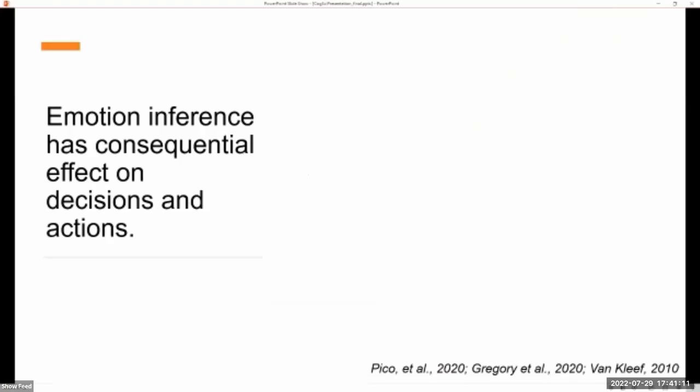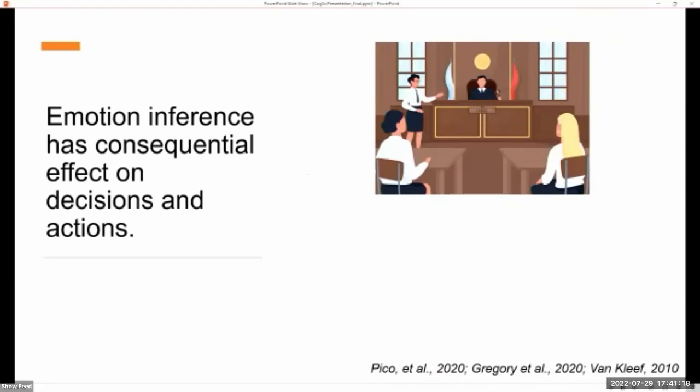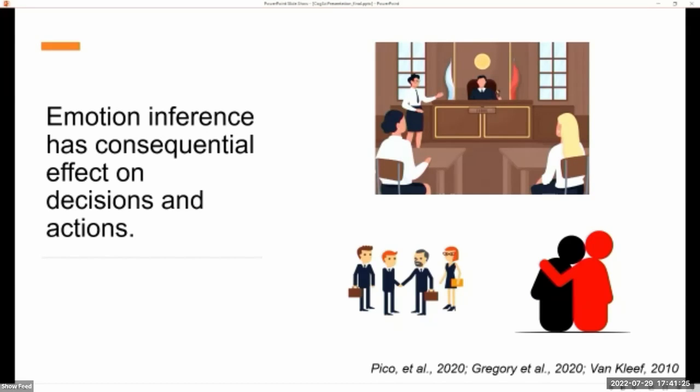So when we infer what someone else is feeling, it has consequential effects on our decisions and actions. For example, when we're making moral and legal judgments, when we're trying to negotiate a contract, or when we try and provide support to a loved one.